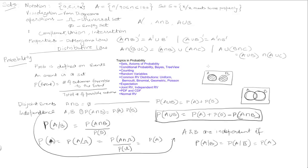We've finished these topics — we've defined conditional probability — and we are going to look at the tree view next and Bayes' theorem.